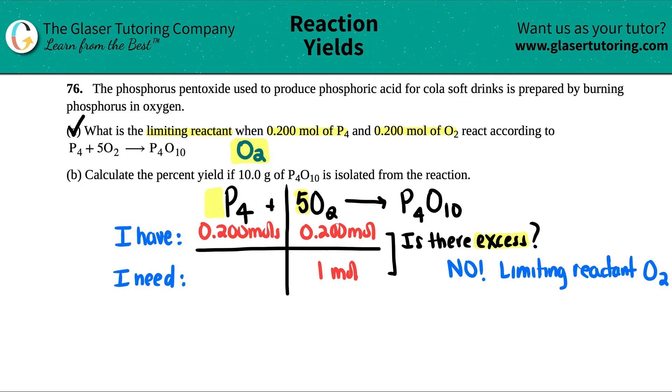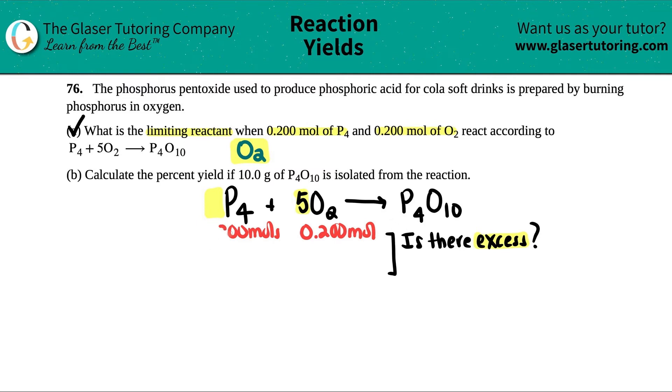Now I want to calculate the percent yield if 10 grams of P4O10 was isolated. Okay. So what I'm going to do is let's get rid of this chart, because now we're going to be working with the P4O10. Now, since the O2 is the limiting, that's the only one that I care about. So I don't care about the P4 amount. So goodbye. We don't care about that.